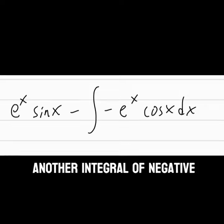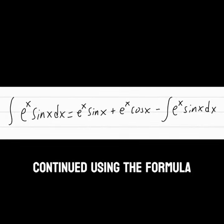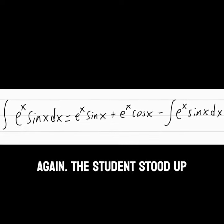The student ended up getting another integral of negative e to the x cos x. The student continued using the formula and got the original integral again.